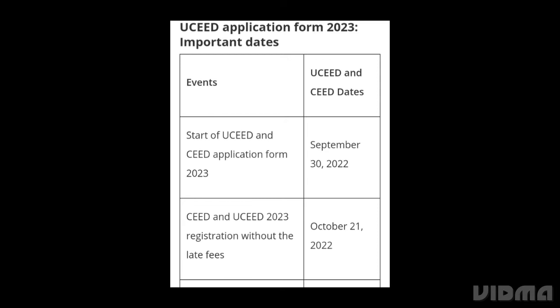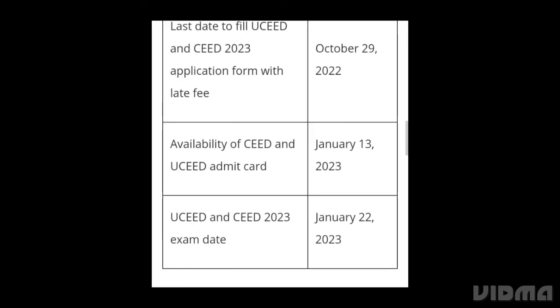Important dates: UCEED and SEED application form starts September 30. Last date to register without late fee is October 21, and with late fee is October 29. Admit card will be released on January 13, 2023. Exam date is January 22, 2023.